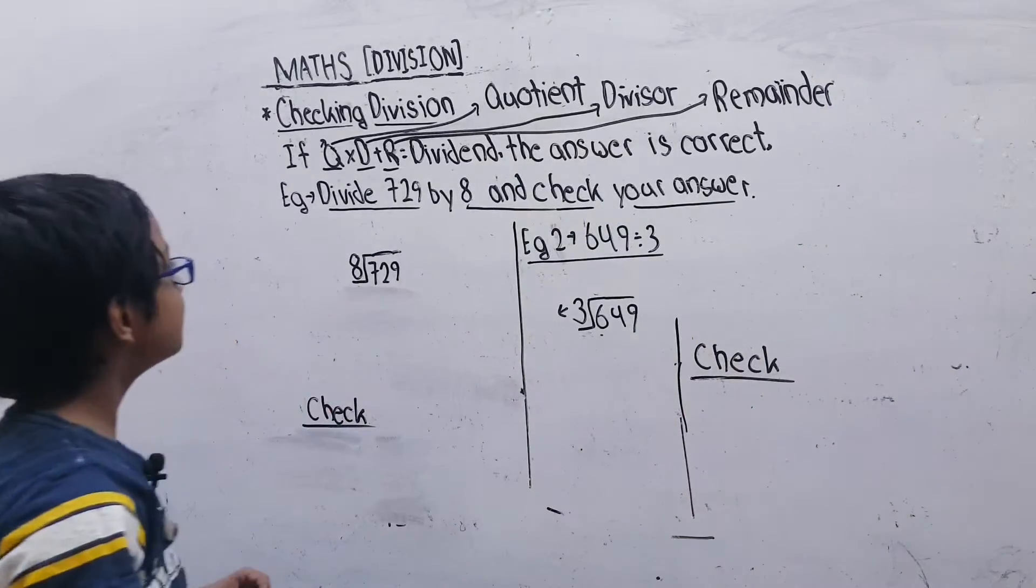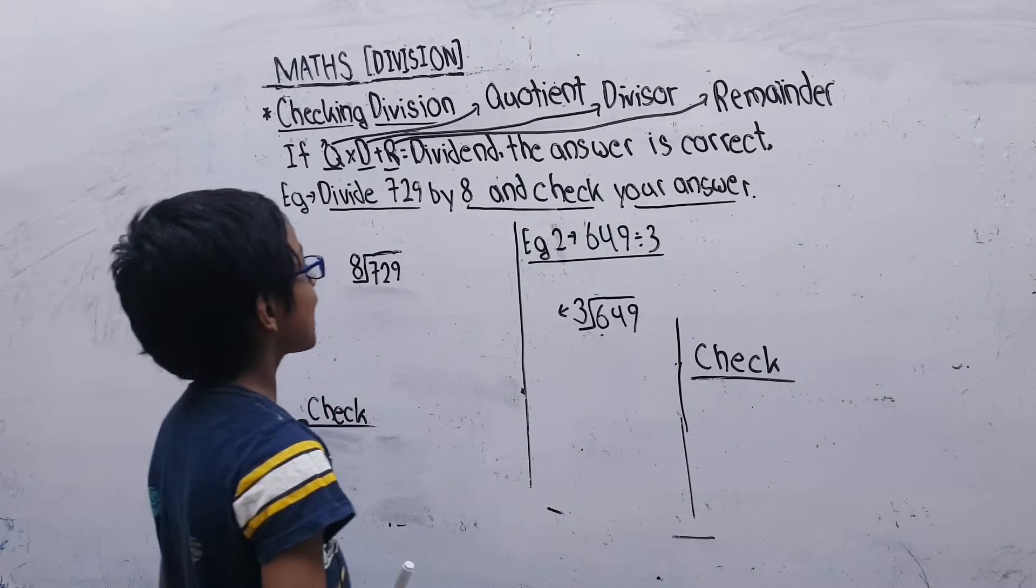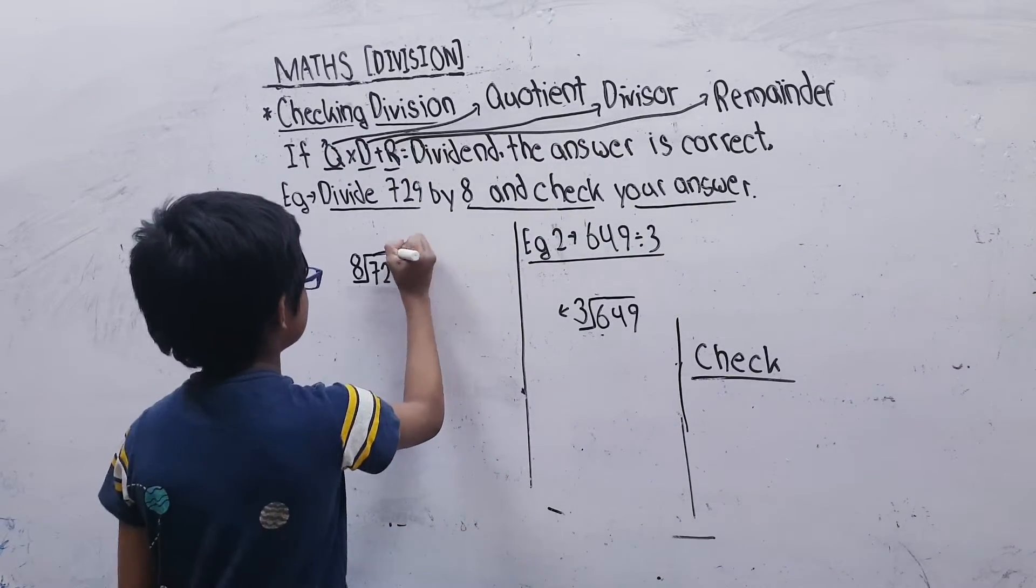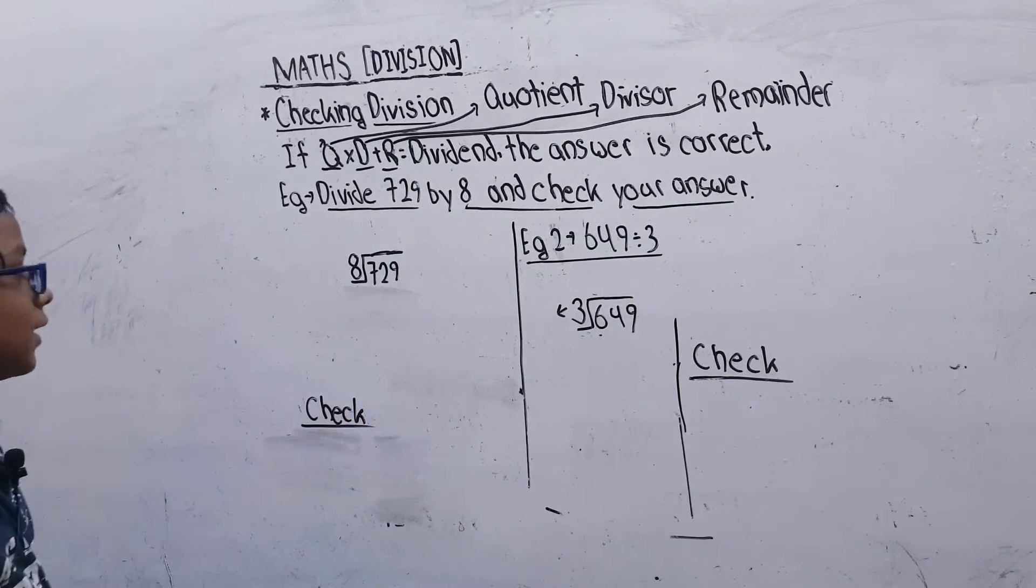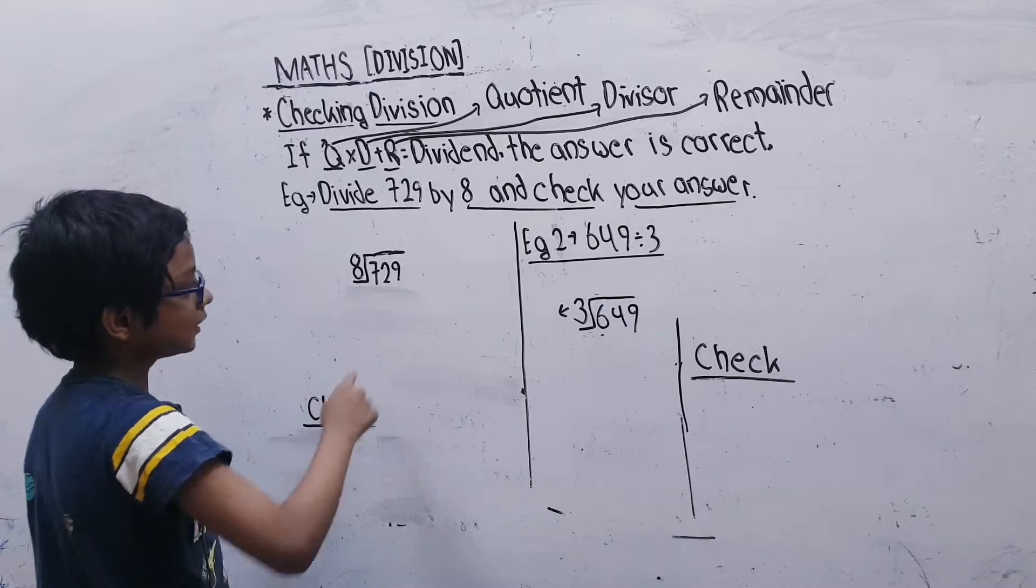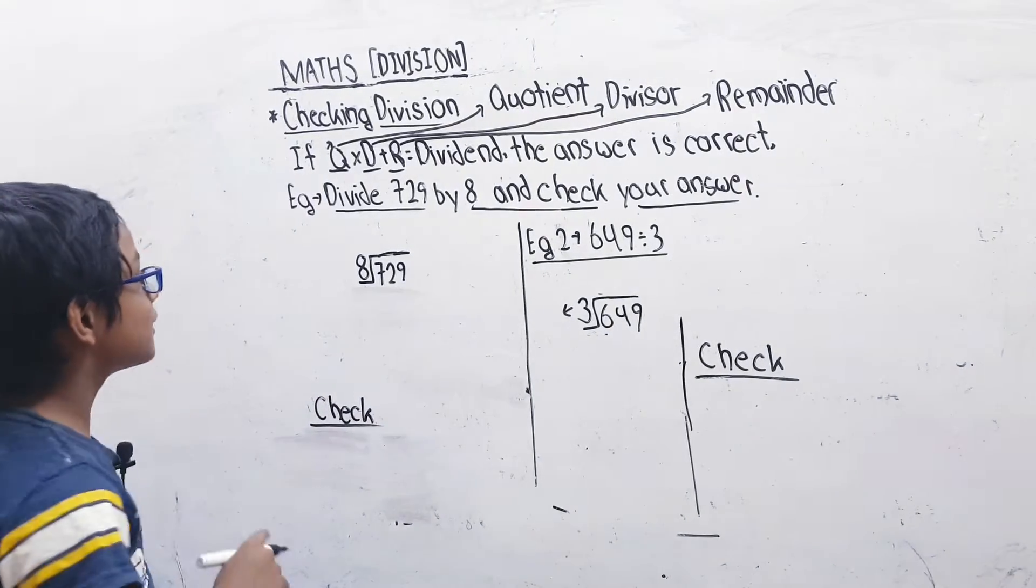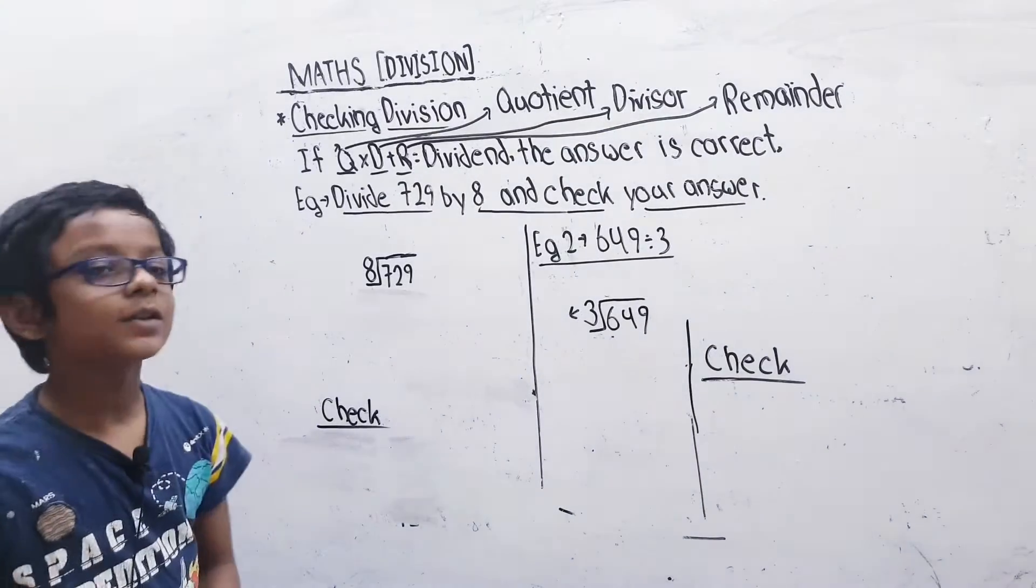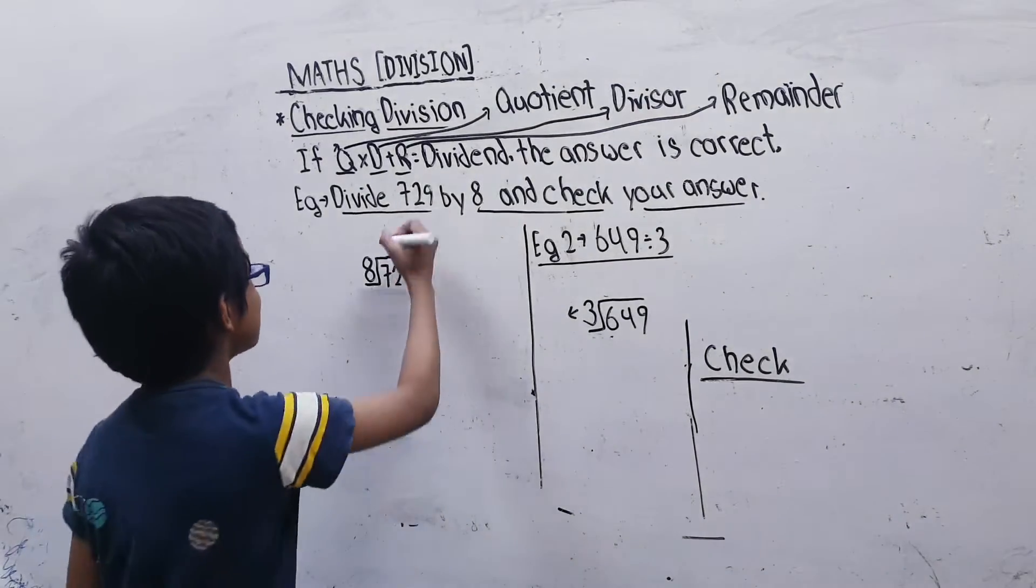Let's see an example: divide 729 by 8 and check your answer. 8 divides into 729. We will multiply 8 here: 8×1=8, 8×2=16, 8×3=24, 8×4=32, 8×5=40, 8×6=48, 8×7=56, 8×8=64, 8×9=72.